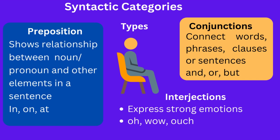The last category is interjection. Interjections are words used to express strong emotions and are often set apart from the rest of the sentence by a comma or exclamation mark. For example, 'oh,' 'wow.' These words showing strong emotion are called interjections.